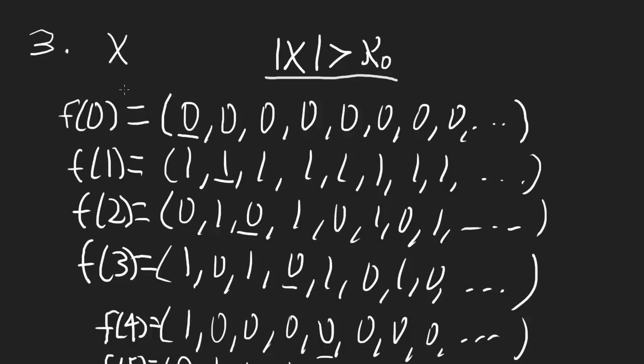So there is no surjective function from the natural numbers to x, and this shows that the cardinality of x is greater than the cardinality of the natural numbers. That means x is called an uncountably infinite set.